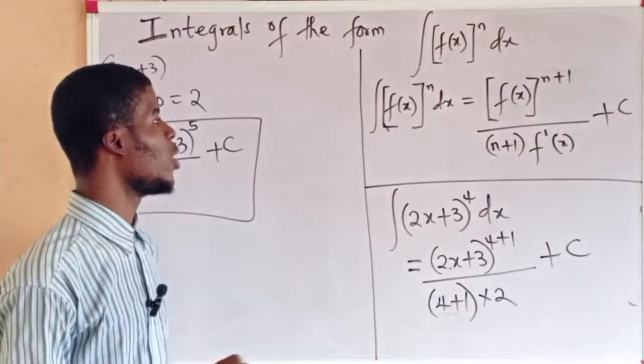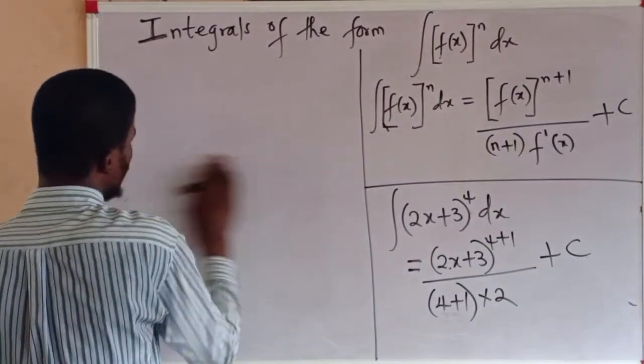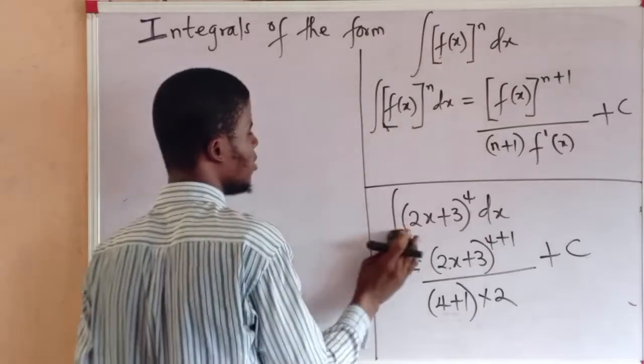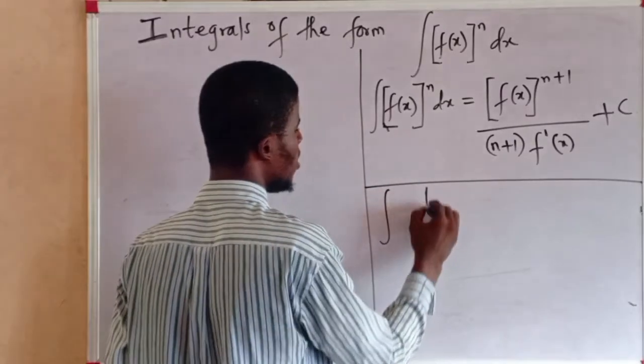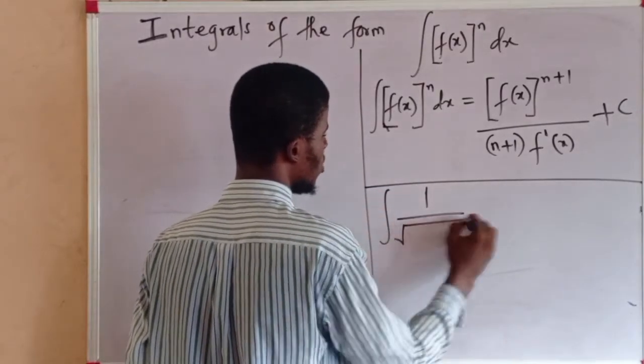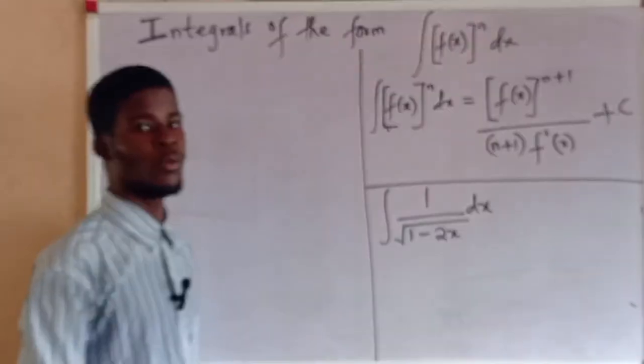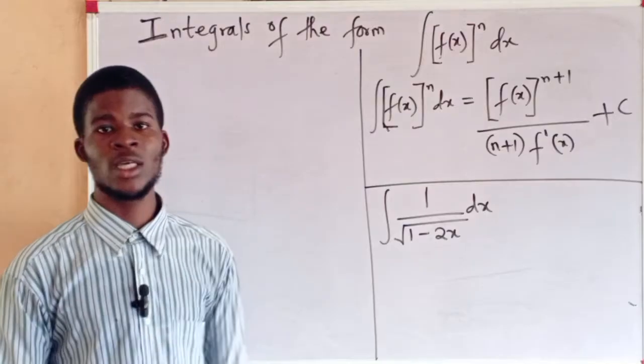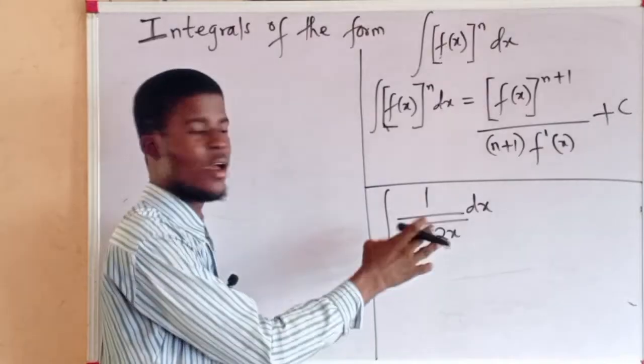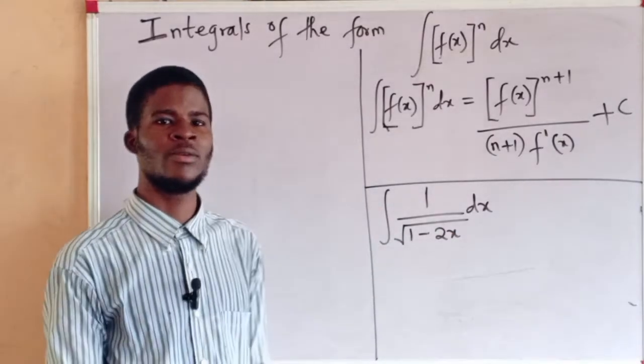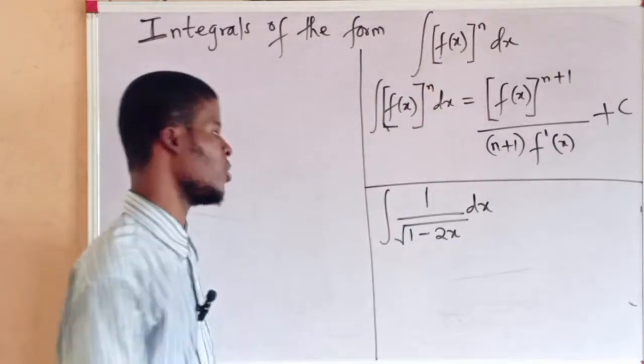Now, we can apply this formula to evaluate the integral of a function where the function is a radical. This is what I'm saying. For example, I want to evaluate the integral of 1 all over the square root of 1 minus 2x dx. Using this formula. Will it work? Yes, it will work. Let's see how it's going to work. Let us first of all try to simplify this function to a form like this: f(x) all to the power of n.